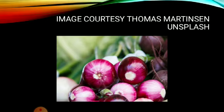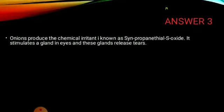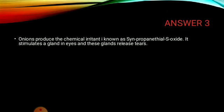And our third question — these are onions. The question was: when we cut an onion, why do our eyes shed tears? Why do our eyes get irritated? The answer is onions produce a chemical irritant known as synpropanethyl S-oxide. It stimulates a gland in the eyes, and these glands release tears.